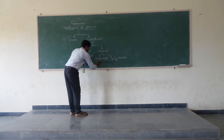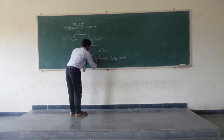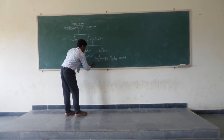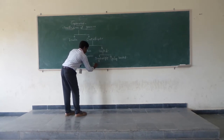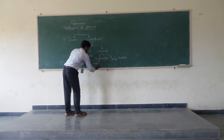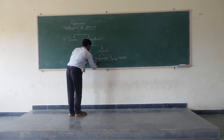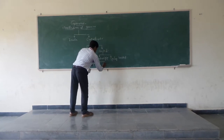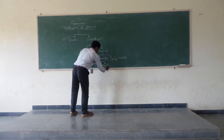The dead weight governor is further classified into two types: the Porter governor and the Proell governor.